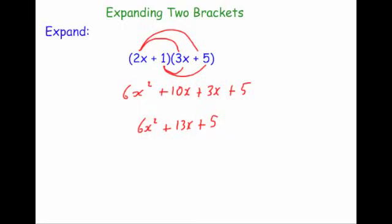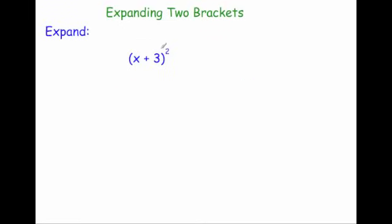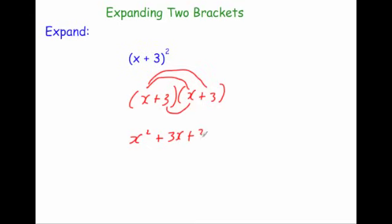And our last example is to expand (x + 3)². Now remember squared means multiply it by itself. And if that's ever beside a bracket write the bracket beside itself, because we have to multiply the bracket by itself. So we're going to do x times x is x². x times 3 which would be plus 3x. 3 times x which is plus 3x. And 3 times 3 which is plus 9. The 3x plus the 3x in the middle will become 6x. So you're going to get x² + 6x + 9. And that's it.